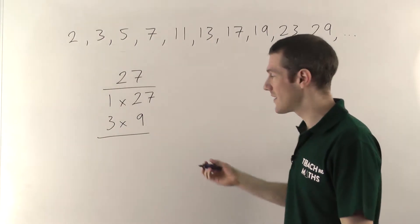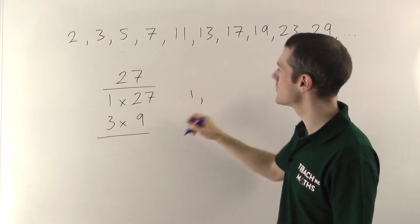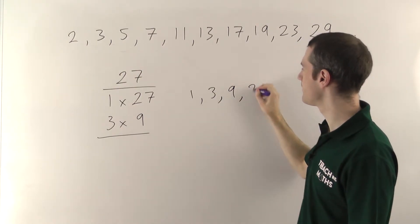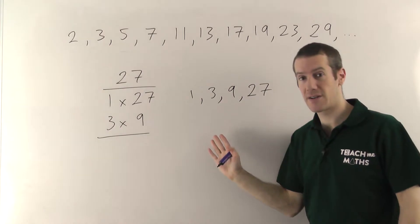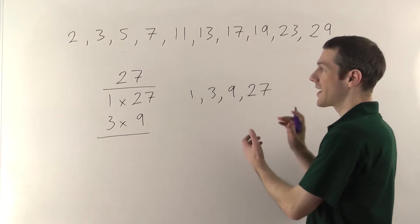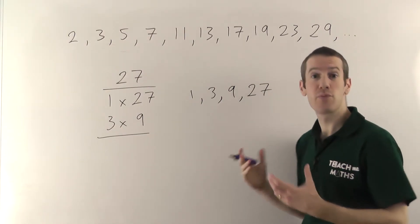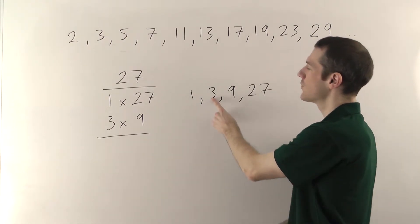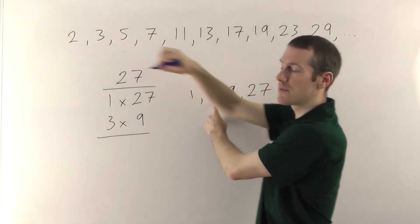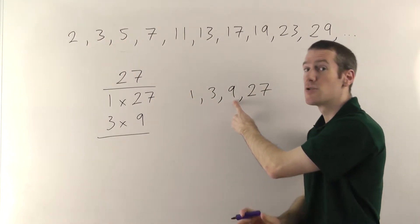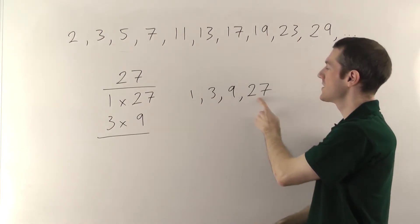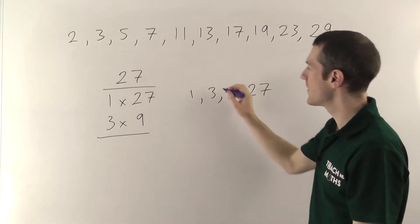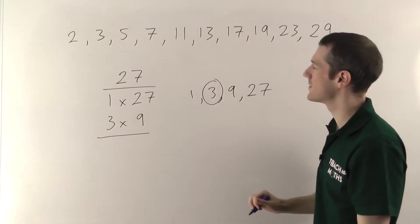So, in fact, the only factors of 27, if you're asked to write out all the factors, would be 1, 3, 9 and 27. So, those are the factors of 27. And then you'd have to pick out which one of these factors are prime. Well, remember, 1 is not a prime number. Don't include that one. 3? Yep, that's a prime number. 9? That's not prime, because it's divisible by 3. And 27? Well, that's divisible by 3 and 9, so that's not prime either. So, in fact, the only prime number from this list of factors would be 3.